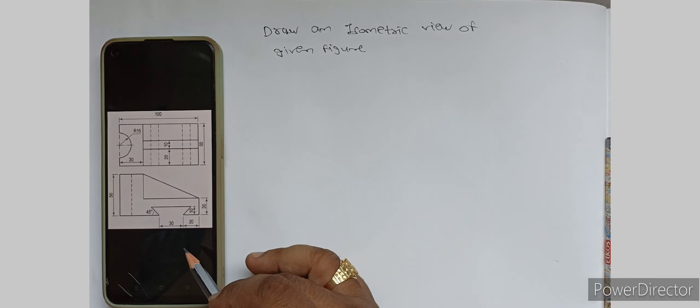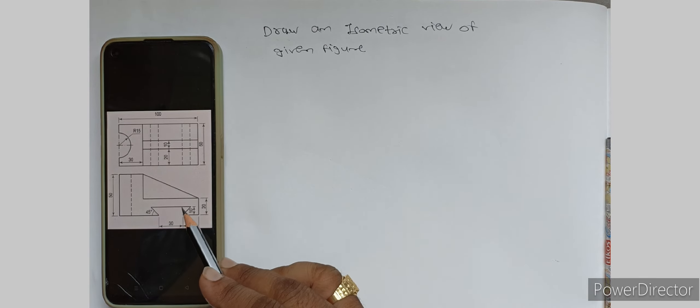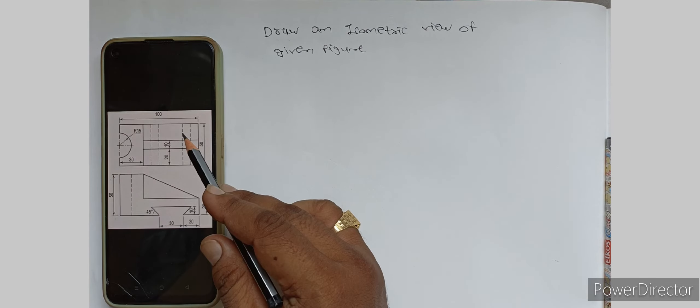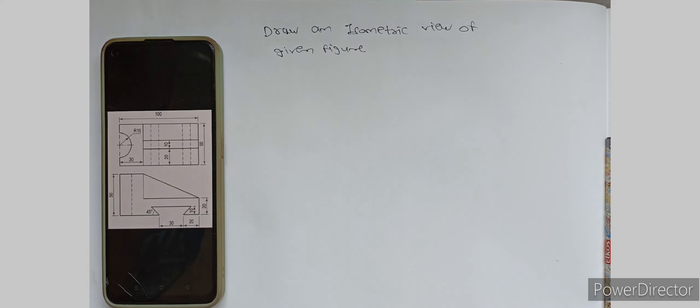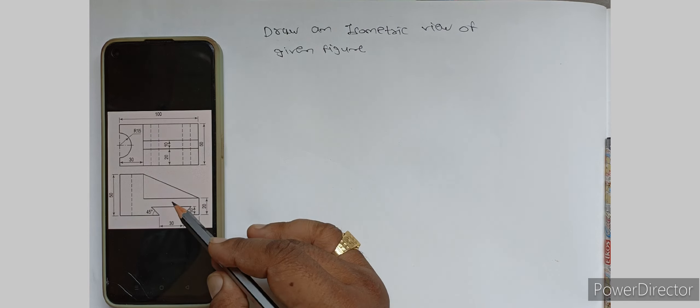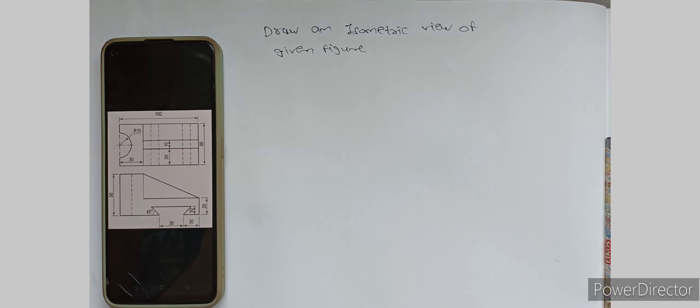Now students, this is the figure. Here we can see this is the elevation and this is the plan. This is the third angle projection method, so the elevation is given below the plan.